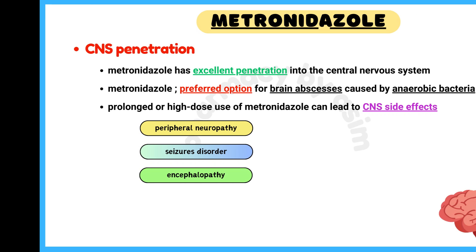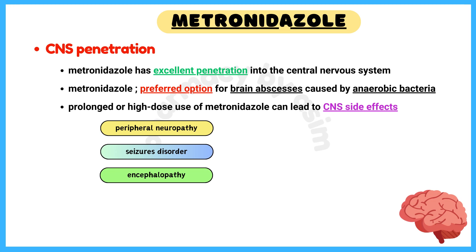Number 2: CNS Penetration. Metronidazole has excellent penetration into the central nervous system, which makes it a preferred option for brain abscesses caused by anaerobic bacteria. While effective, prolonged or high-dose use of metronidazole can lead to CNS side effects like peripheral neuropathy, seizures, or encephalopathy, though these occur in rare cases.